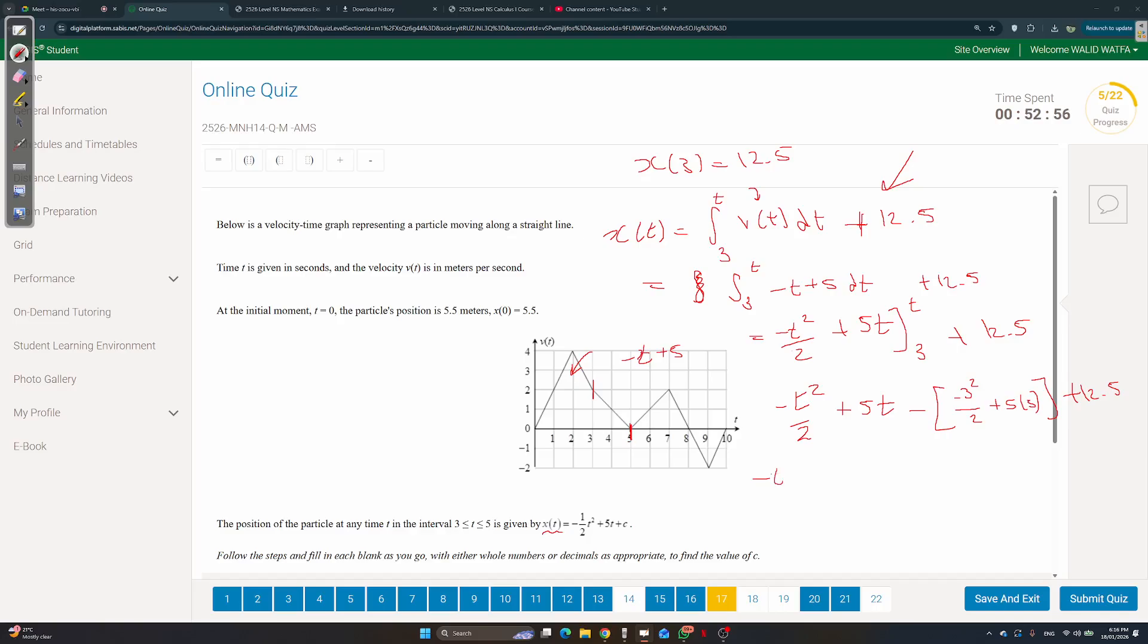So you get negative t squared over 2 plus 5t. Negative 9 over 2, sorry, it becomes plus 9 over 2 because the minus minus. Then minus 15 plus 12.5. And you get negative t squared over 2 plus 5t, 9 over 2 minus 15 plus 12.5. Let me calculate: 2.5, 4.5, plus 2, so c is 2.